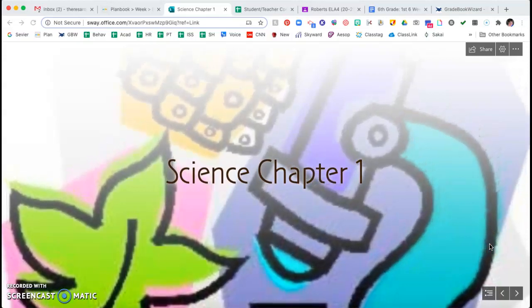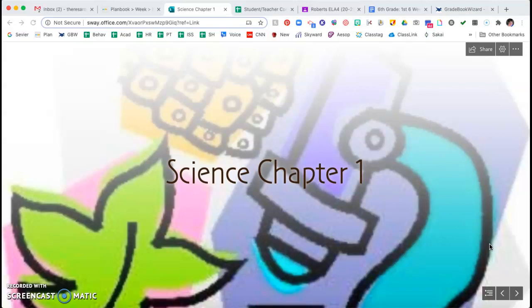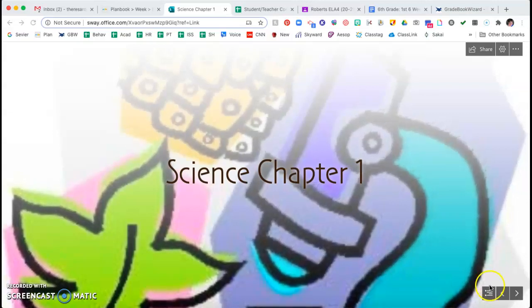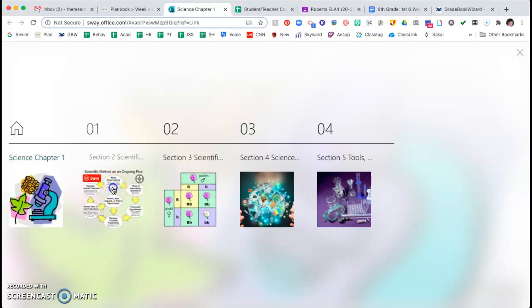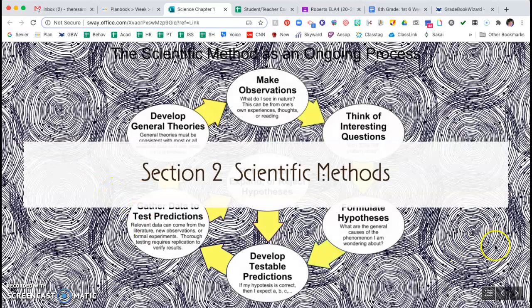Today we are going to continue with science chapter one lesson two. You will need your directed reading 1.2, which is in your science binder. I suggest either you follow along with me as I teach the lesson or if you can't keep up that way, go back and use your textbook because all of the answers are in order.